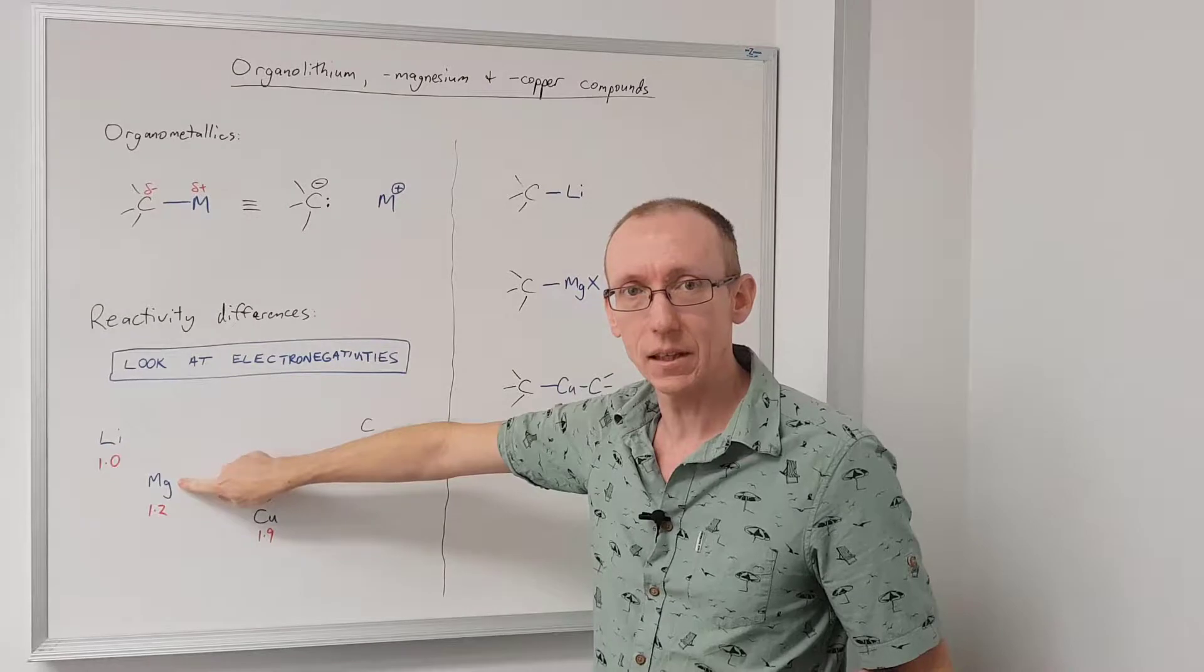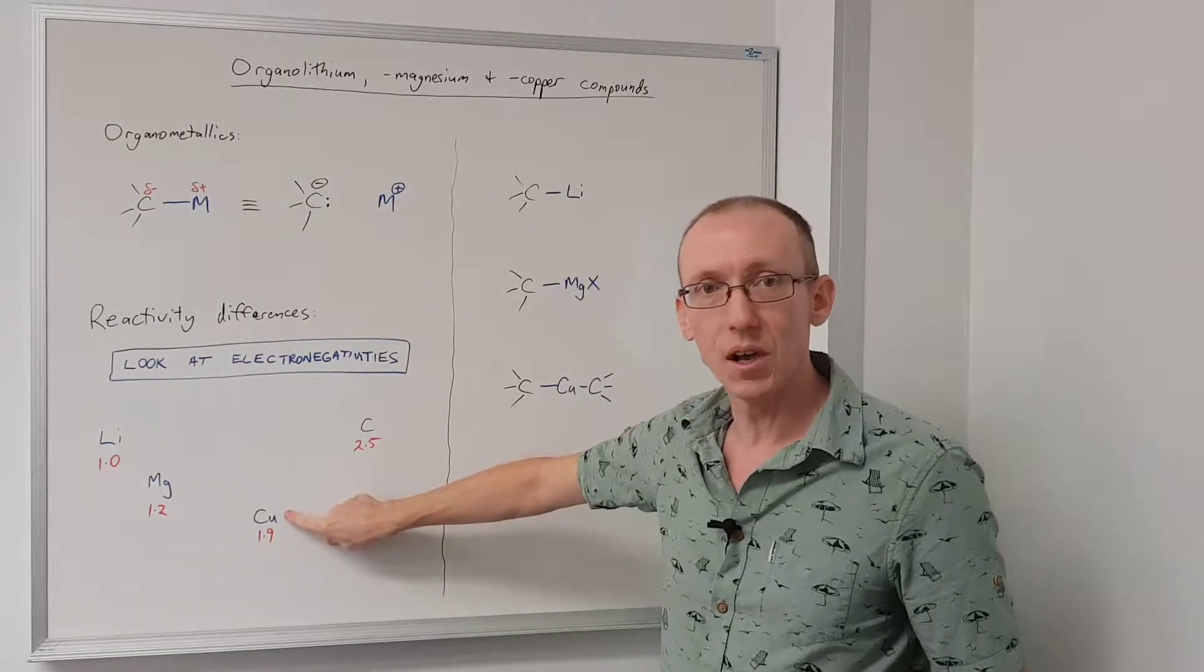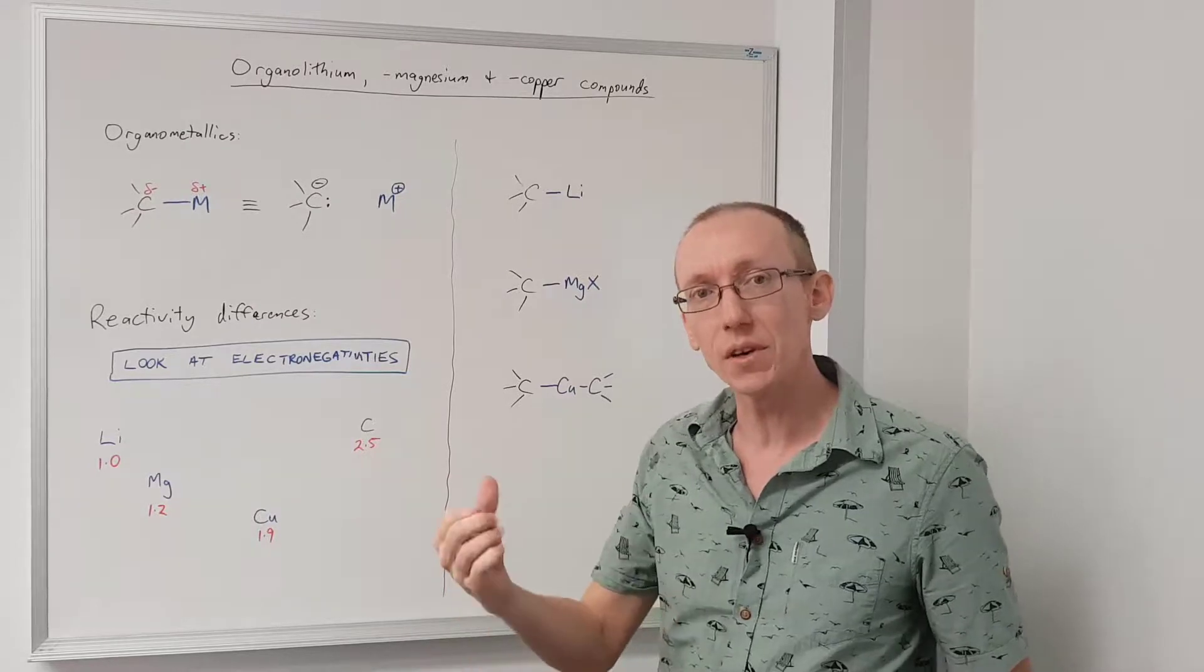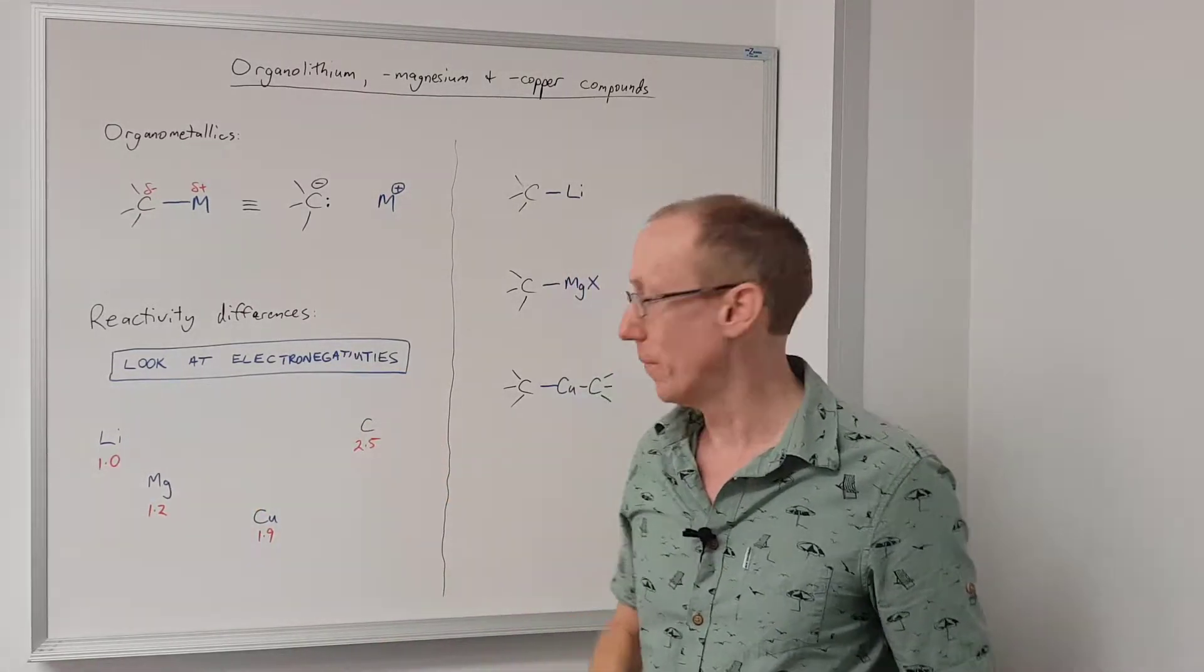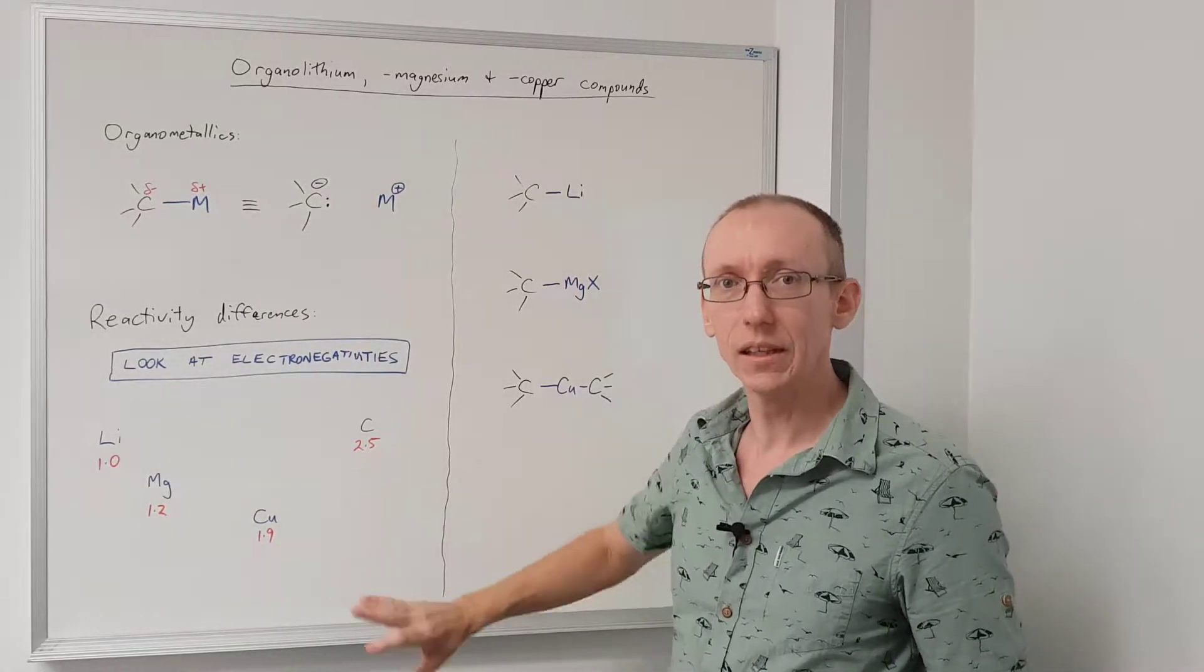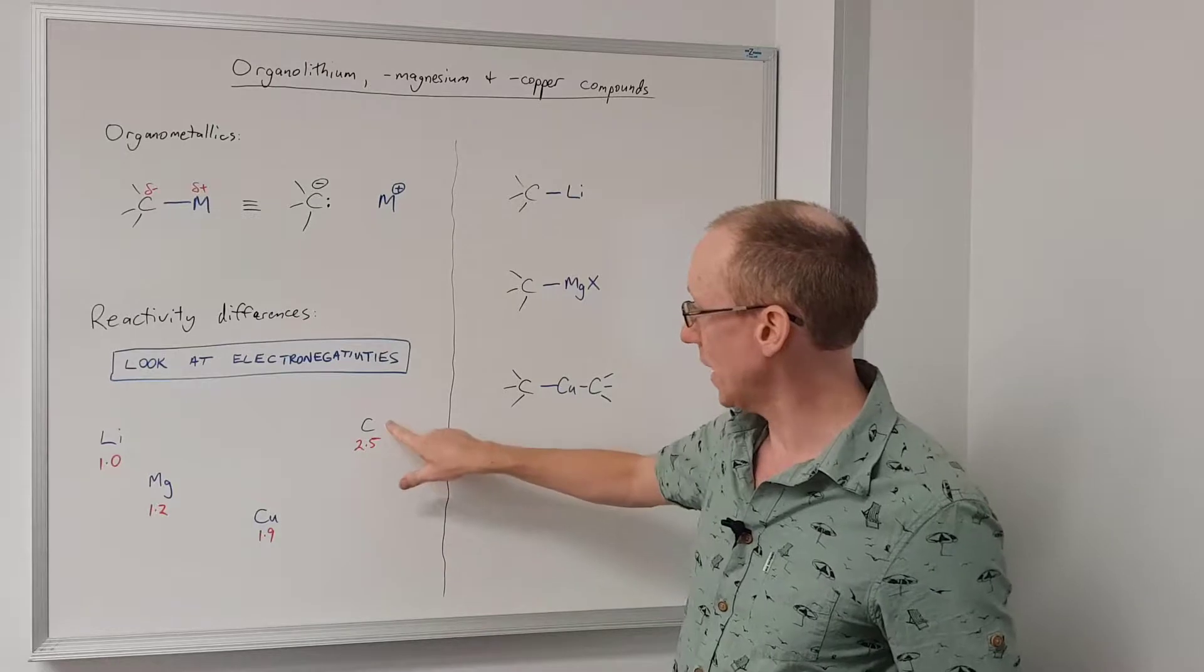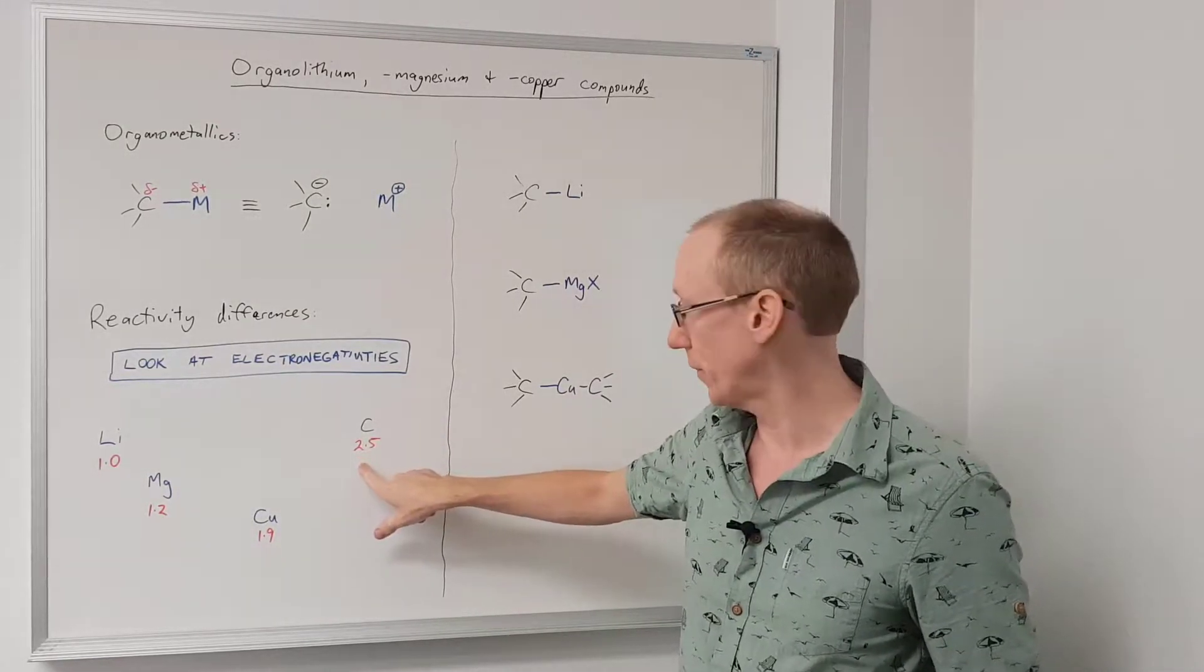Magnesium is fairly similar. It's 1.2 on the scale, whereas copper is 1.9. So copper is much more electronegative than magnesium or lithium. And so it's going to share electron density more evenly in a covalent bond with carbon because carbon has an electronegativity of 2.5.